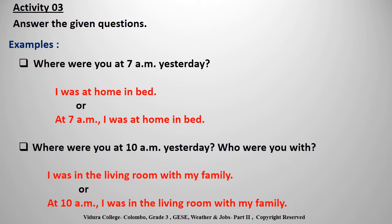Here is another small activity for you. Activity 3: Answer the given questions. I have given two examples for you. First example: Where were you at 7 a.m. yesterday? You can answer: 'I was at home in bed' or 'At 7 a.m. I was at home in bed.' Second example: Where were you at 10 a.m. yesterday? Who were you with? You can answer: 'I was in the living room with my family' or 'At 10 a.m. I was in the living room with my family.'